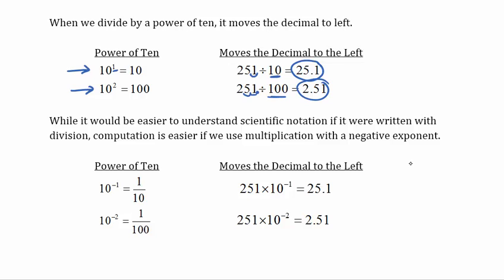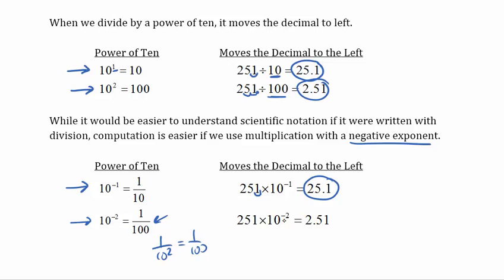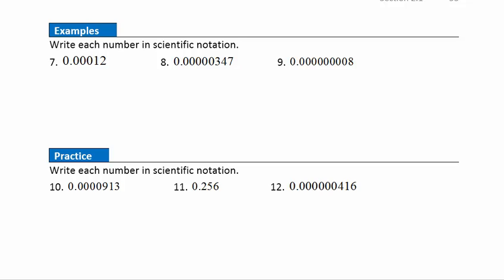While division notation is easier to understand, it causes problems when computing, so we write small numbers using negative exponents instead. Multiplying by 10 to the negative first power is the same as dividing by 10 — it moves the decimal one place to the left, so 251 times 10 to the negative first is 25.1. Multiplying by 10 to the negative second power moves the decimal two places left, giving 2.51.